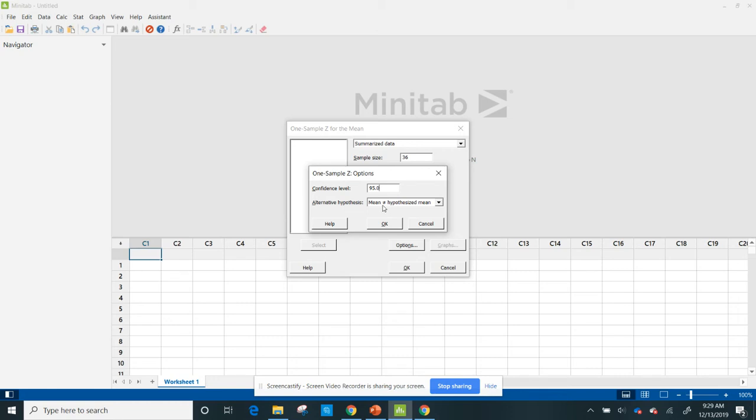For confidence intervals you always want the not equal sign, and that is because this is a two-tailed test. Why? Because you want a range of what the scores can be. That range means I have a lower bound and an upper bound, so that makes it two tails. I hit OK, and I hit OK.